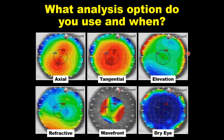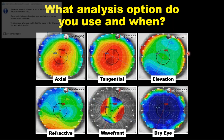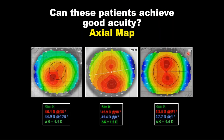When you receive your corneal topographer, you'll notice there are many ways to analyze the images it takes. With Medmont — and any Placido topography — we are working with different maps, as you can see there. Each one gives us a certain type of information. There are six maps available specifically at the Medmont level.